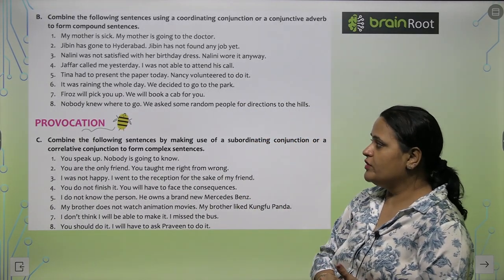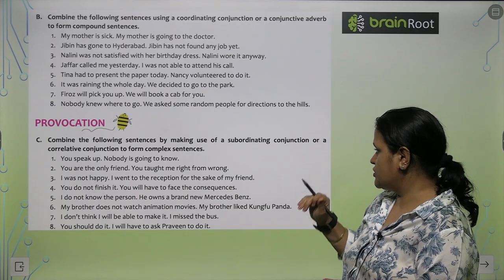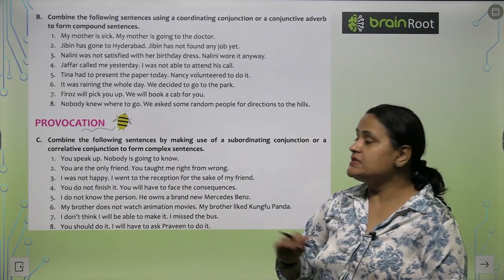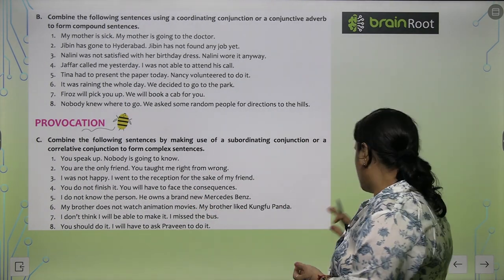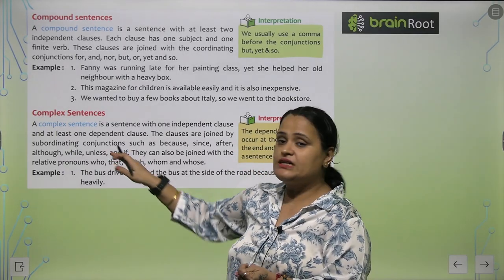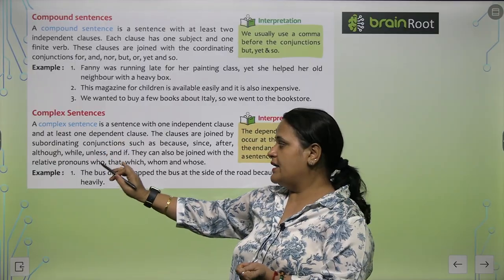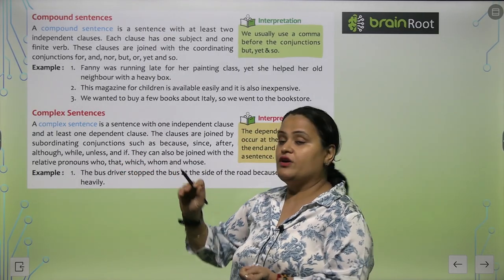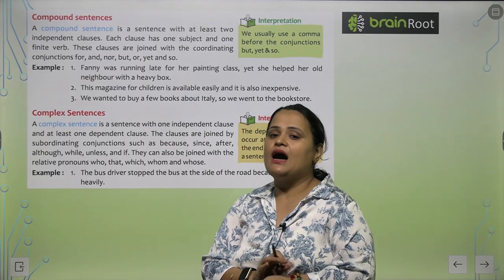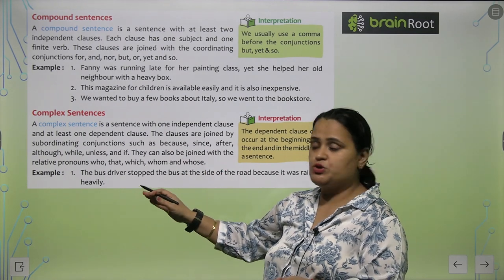The rest of that exercise you will do yourself. Now, combine the following sentences by making use of a subordinating conjunction or a correlative conjunction to form complex sentences. For complex sentences, the conjunctions used are: because, since, after, although, while, unless, and if. Relative pronouns — who, that, which, whom, whose — can also be used to join clauses.